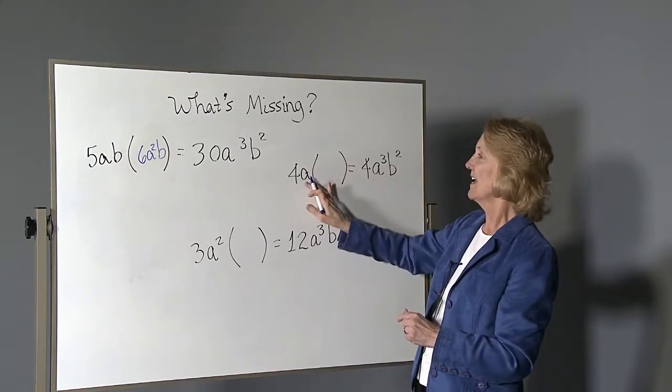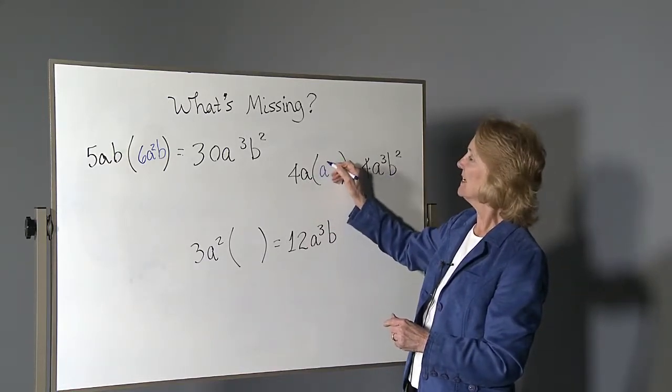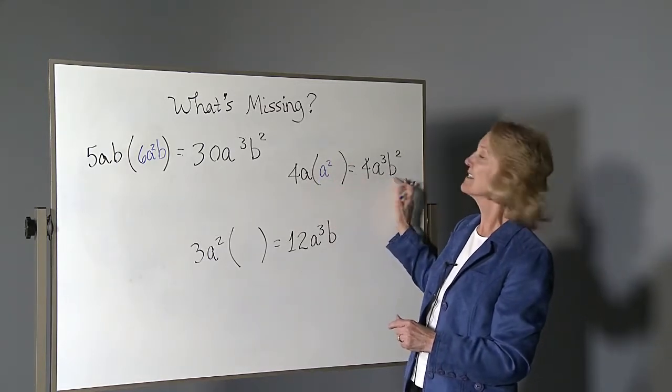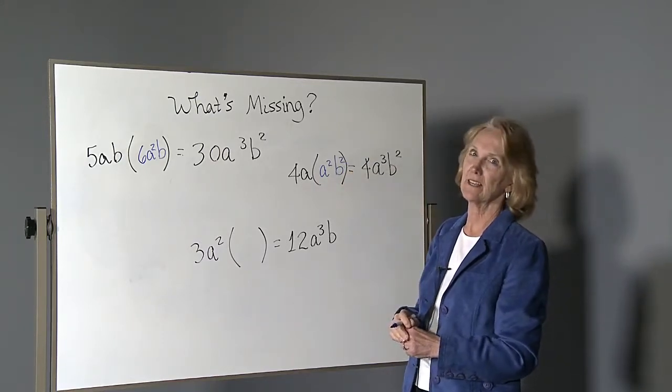We don't even have to write it. a times something will give us a to the third. It must have been a to the second. We didn't have any b's, but now we need b to the second, so this factor must have had the b to the second. Done.